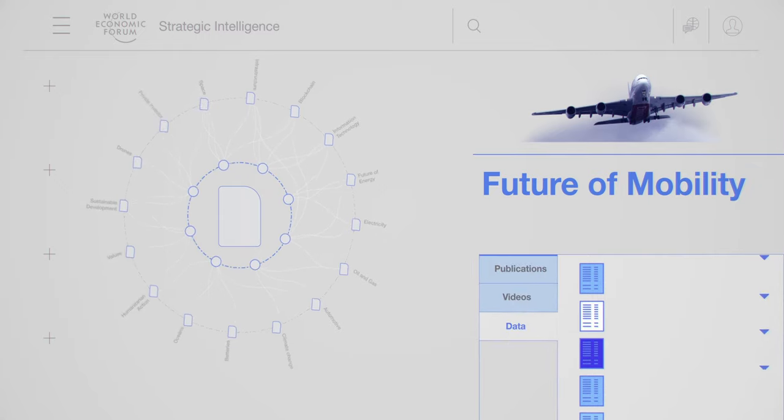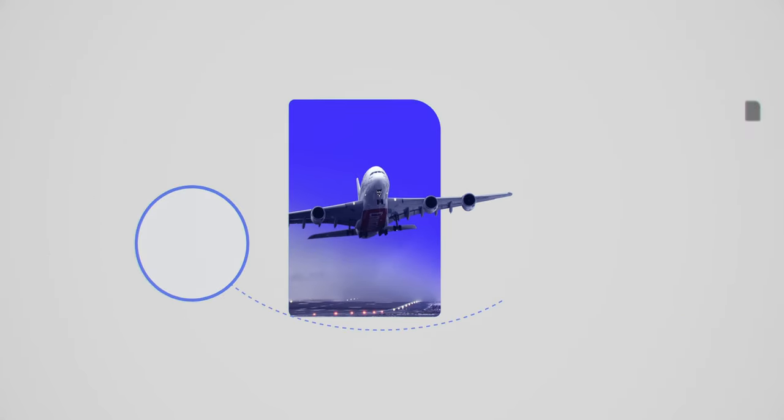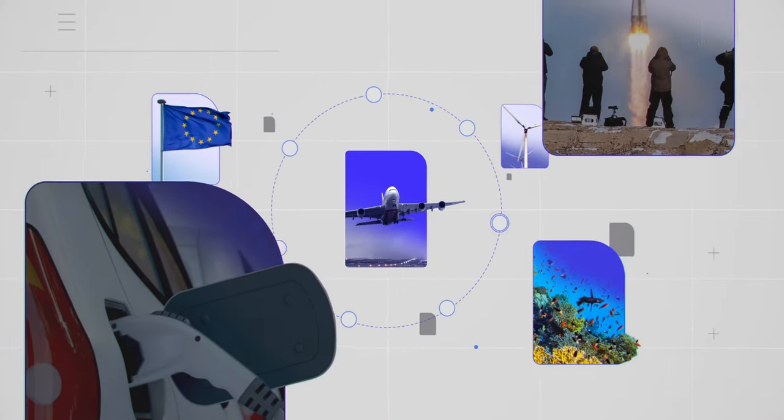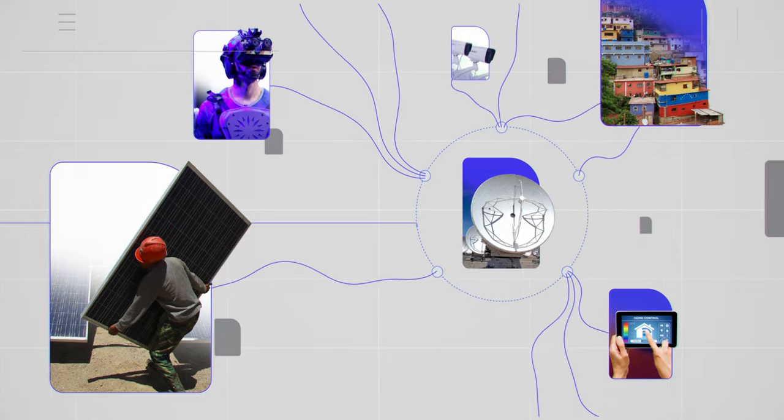At its heart are the Forum's transformation maps. They depict and analyze the interdependencies between a wide range of topics, illustrating how developments in one area can impact others.